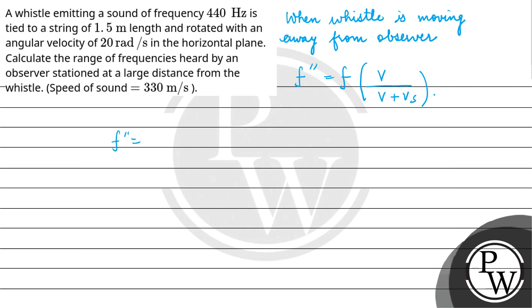So f' will be equal to f, which is 440, times V = 330, divided by 330 plus Vₛ, which is 30. So here you have 440 × 330/360.